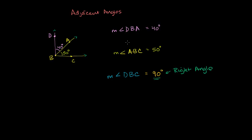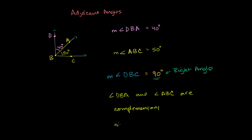There's also a word for two angles whose measures add up to 90 degrees, and that is complementary. So we can say that angles DBA and ABC are complementary, because their measures add up to 90 degrees. The measure of angle DBA plus the measure of angle ABC equals 90 degrees — they form a right angle when you add them up.